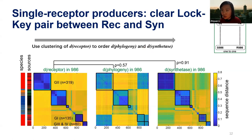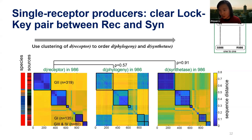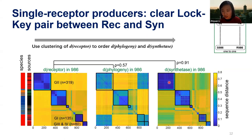In these single-receptor producers, there is an exactly one-to-one relationship between a synthetase and receptor. Because this synthetase is extremely expensive, it does not make sense if they produce something they cannot recognize. So we can see this is a clear sign of coevolution — this block of keys can only open the locks in this block, but not another block.